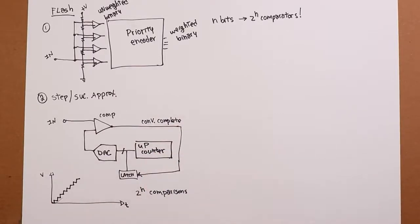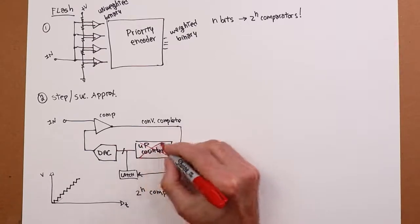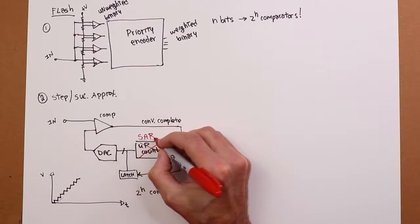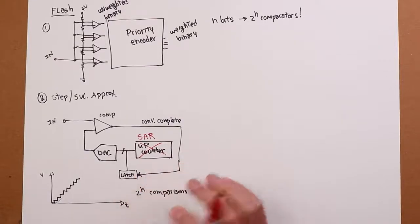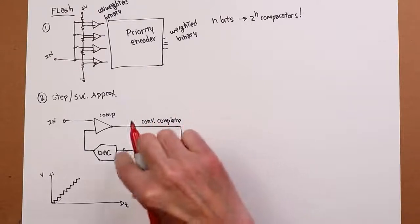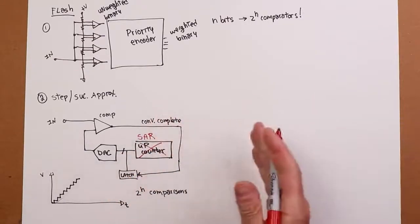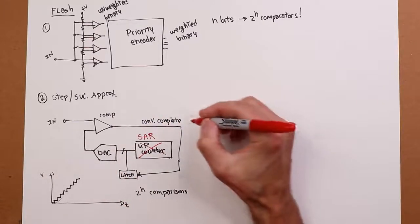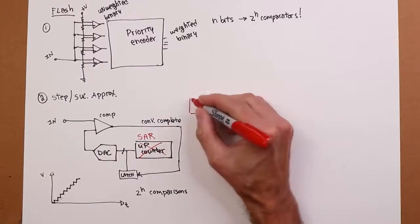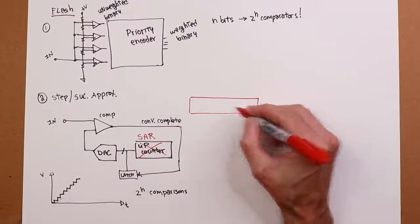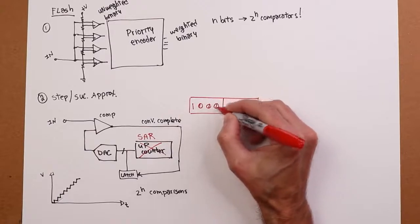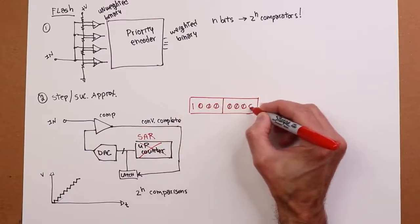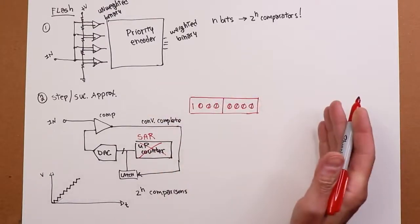But there is a very simple upgrade to this. And that upgrade is to use, instead of an up counter, we use a successive approximation register, an SAR. Now, what that essentially does is it produces a series of values. Instead of just going from zero up, it produces a set of values bitwise, working from MSB down to LSB. So the very first value that it's going to produce, I'm going to sort of set this up like this. Top nibble, bottom nibble. The very first value it's going to produce is this.